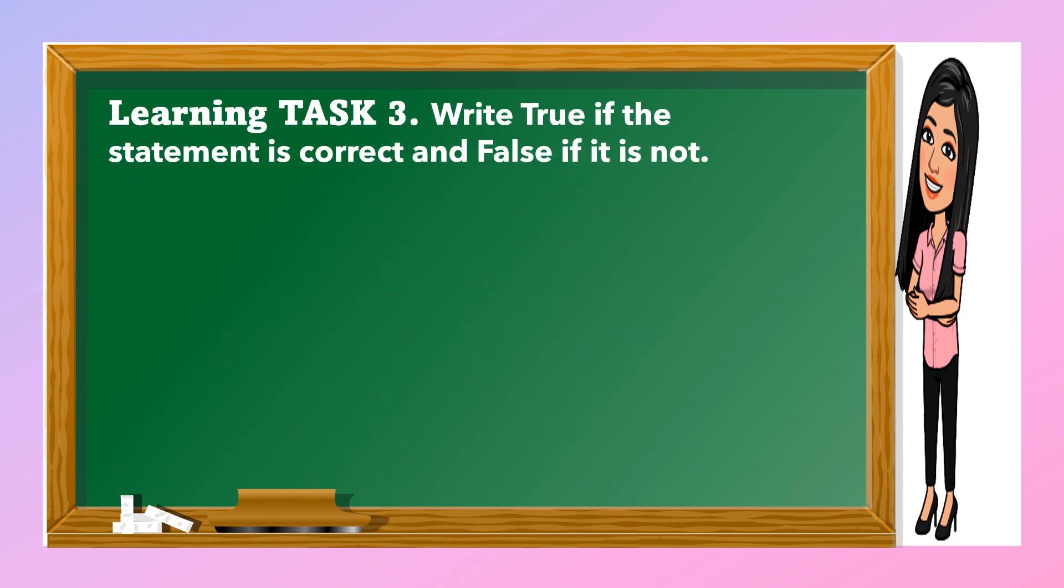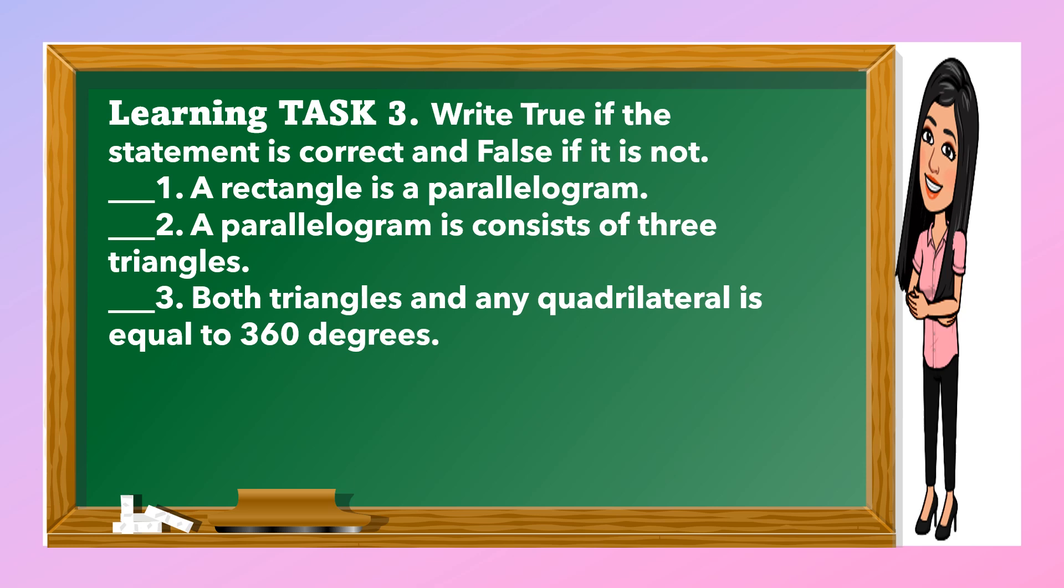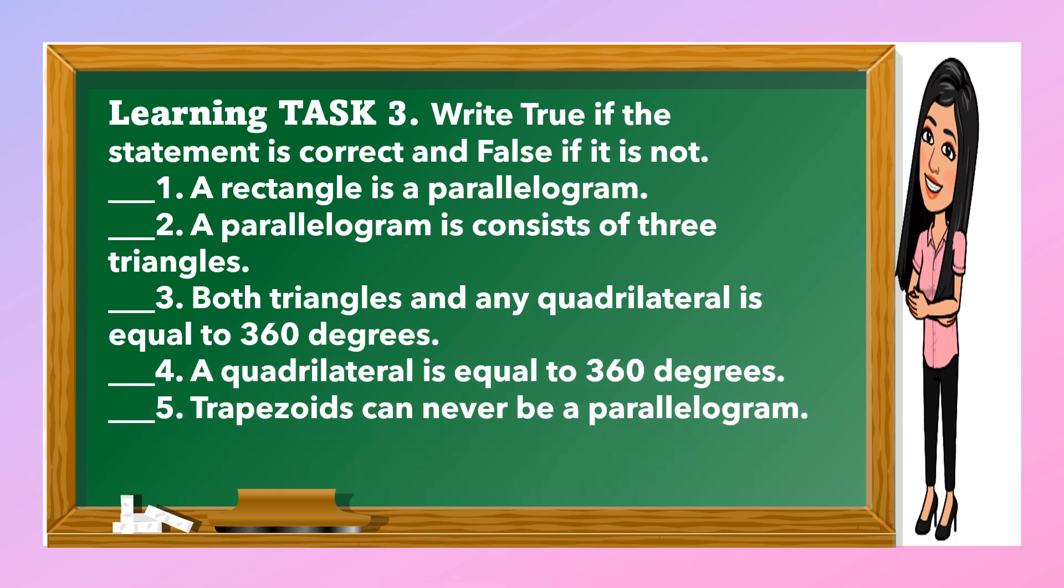For learning task three, write true if the statement is correct and false if it is not. Lalagyan nyo lang kung totoo, true; false naman kung mali. The questions are: A rectangle is a parallelogram. A parallelogram consists of three triangles. Both triangles and quadrilaterals equal 360 degrees. A quadrilateral equals 360 degrees. Trapezoids can never be a parallelogram.